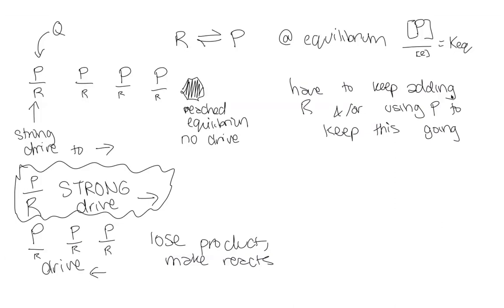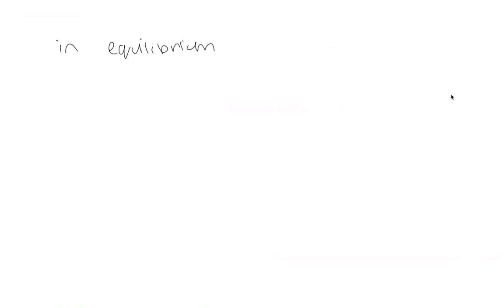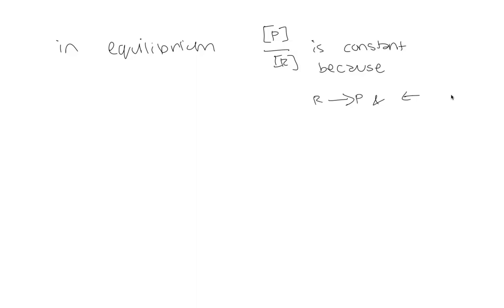There's an alternative — this thing called the steady state. At equilibrium, what we would say is that we had a constant ratio of P over R because the rate of going from reactants to products equaled the rate going from products to reactants. Therefore on net they're not changing — every time we make a product, we go the other direction and make more of the reactants.